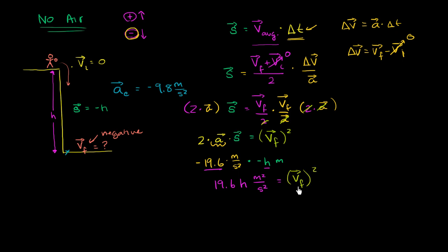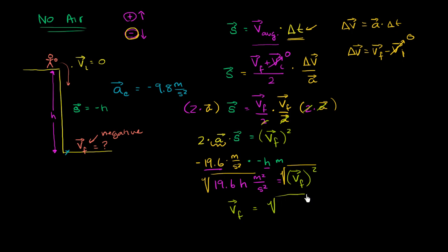Notice that when you square something, you lose the sign information — both positive and negative values yield a positive square. But in this example we're moving downward, so we want the negative version. To find our final velocity, we take the negative square root of both sides. The final velocity equals negative square root of 19.6h, and taking the square root of meter² per second² gives meters per second outside the radical.